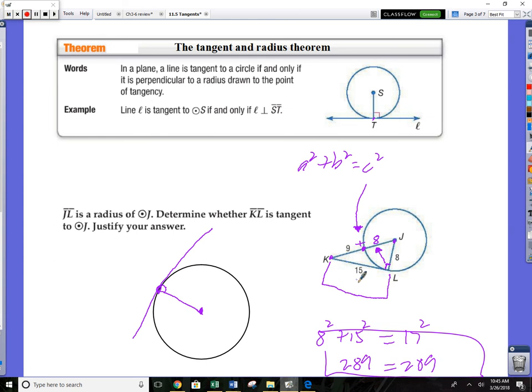So yes, that is a 90, so yes KL is a tangent. Remember, if this would have been like 300, when the hypotenuse, when the big square is bigger, it is obtuse. And when the little guys are bigger, it's acute.